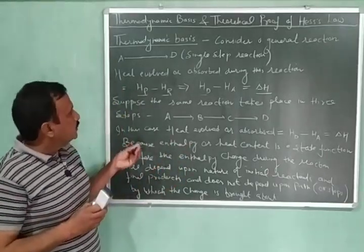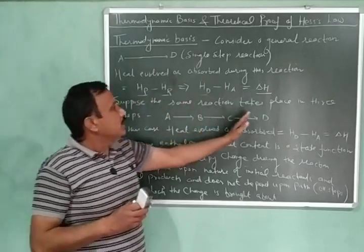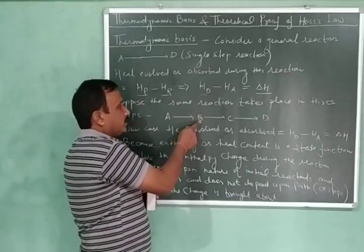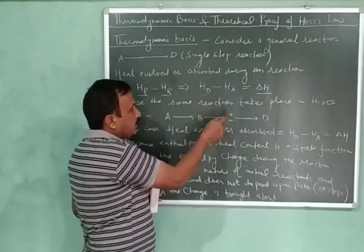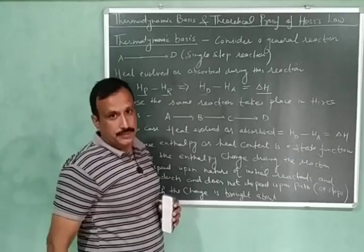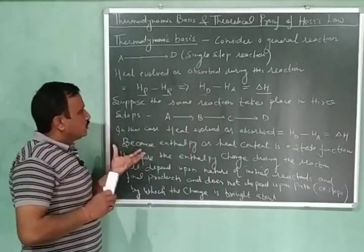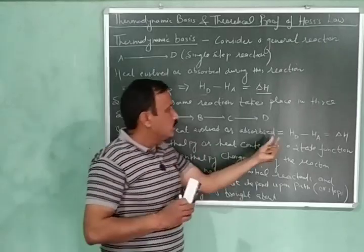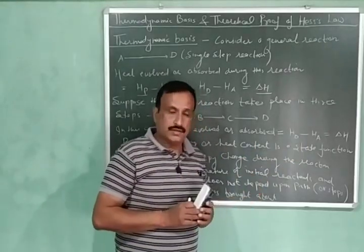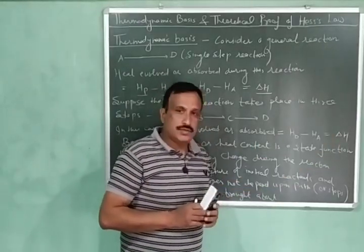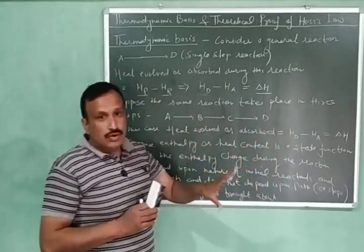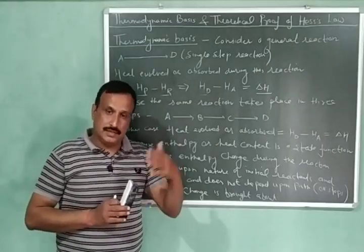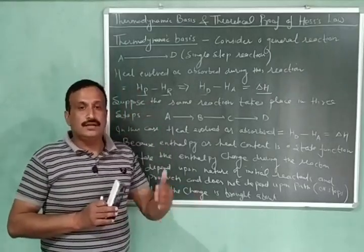Now let us suppose the same reaction takes place in three steps: A is first converted into B, then B to C, and finally C is converted into D. The total heat evolved or absorbed in this case also will be equal to H_D minus H_A, that is delta H. So the amount of heat evolved or absorbed is the same, whether the reaction takes place in a single step or in three steps.